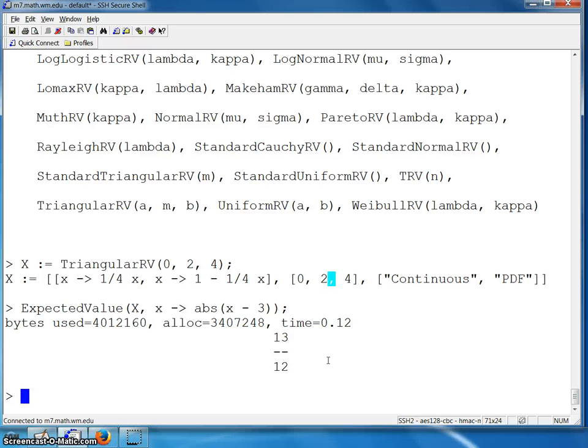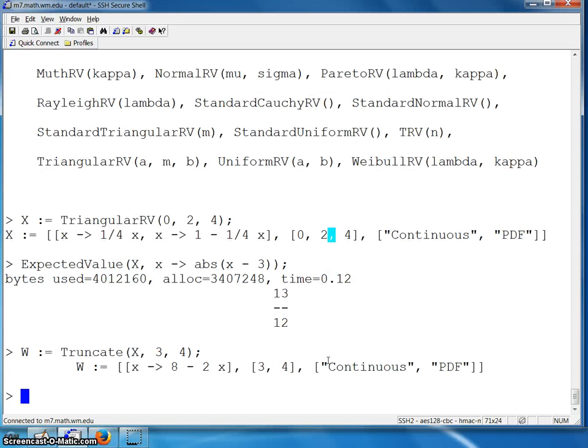Now, the second part says that the personal computer is 3 years old, and you want the remaining lifetime. So I'm going to define a new random variable called W here, and use the truncate function to say truncate that random variable X. So on the left at 3 and on the right at 4. And now we have a new random variable. Notice its support right here is between 3 and 4, and its probability density function is 8 minus 2X.